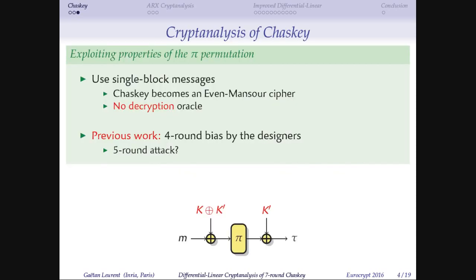In terms of cryptanalysis, we're going to look at security properties of the pi permutation. Using single-block messages, the authentication is simply: take the message, XOR a key, permute, and XOR another key — you can also see it as an Even-Mansour cipher encryption. There's something interesting: you cannot do decryption. Because it's a MAC, you can only take a message and get the tag. Looking at previous work, the designers showed some bias when reduced to four rounds instead of eight, which can probably be extended to an attack on five rounds.